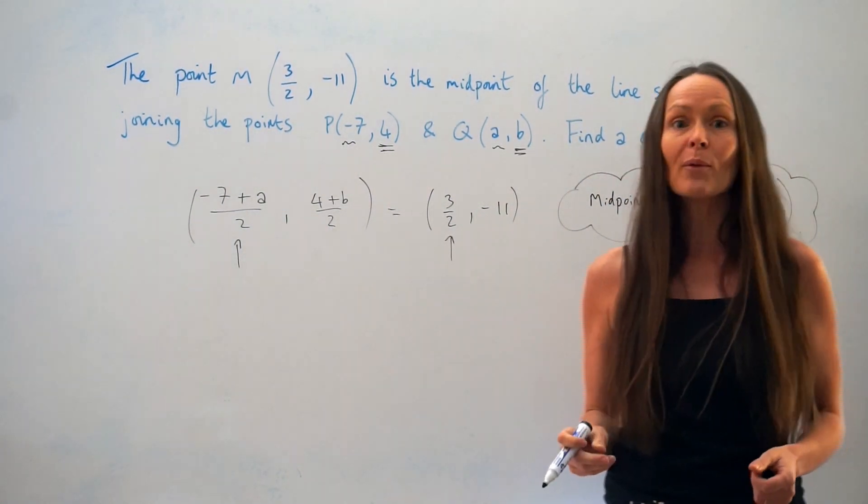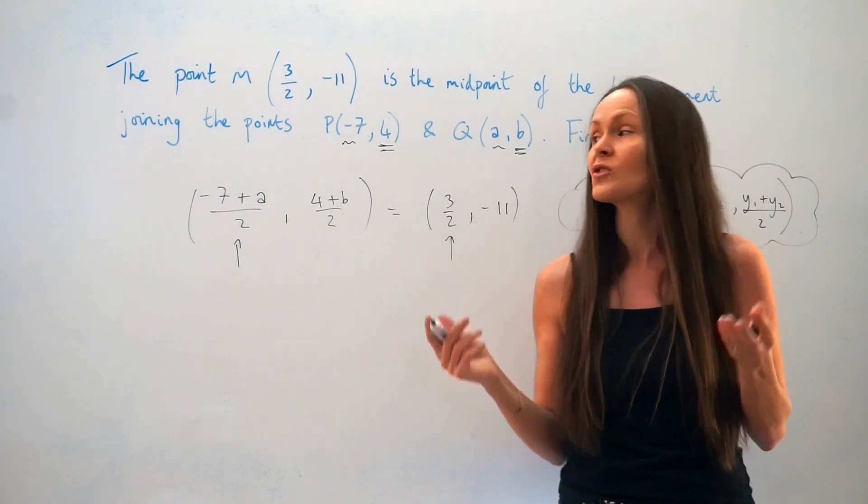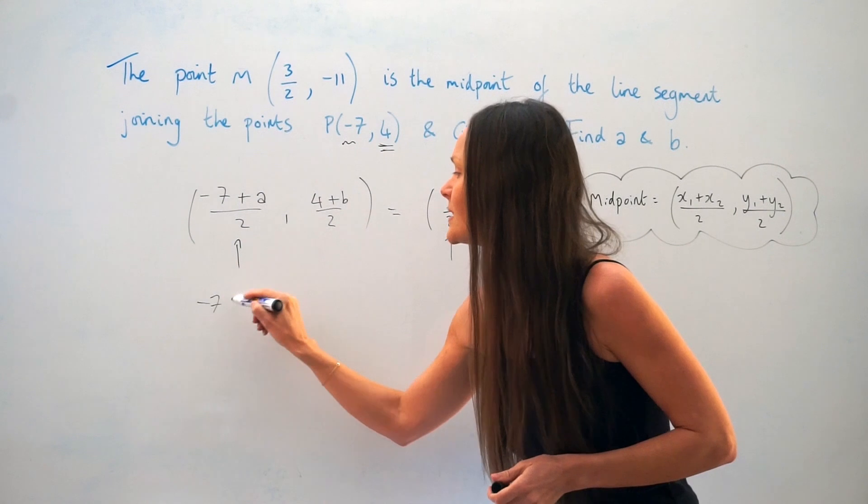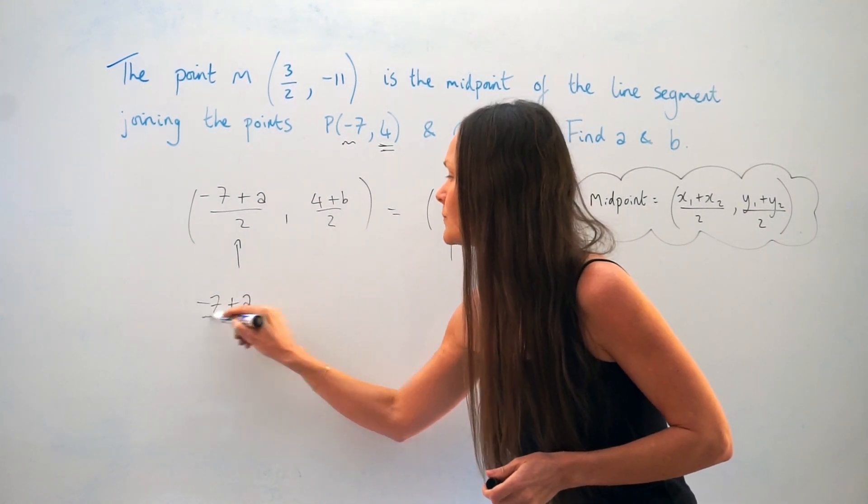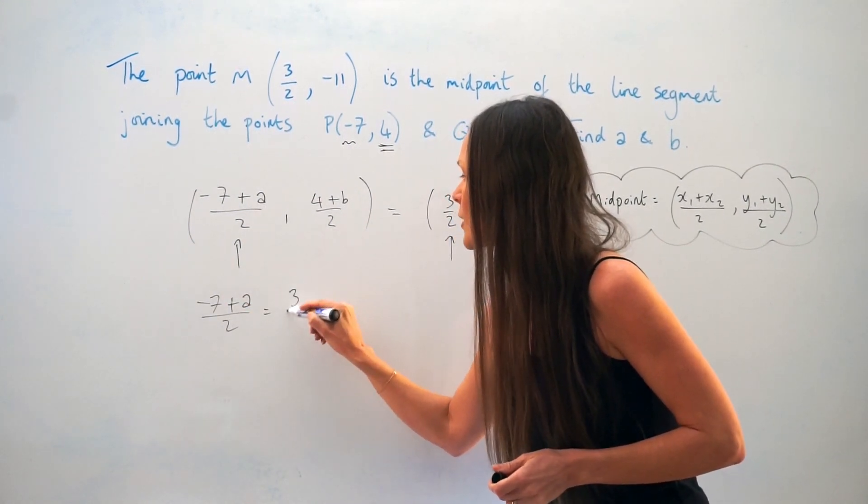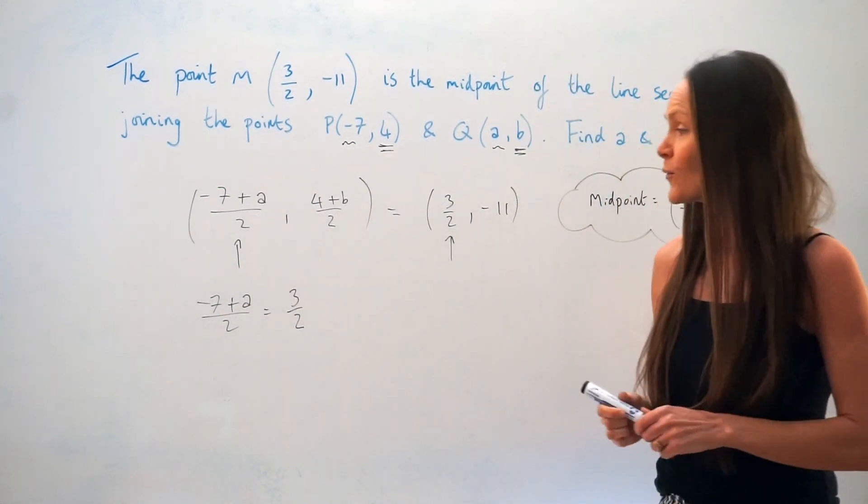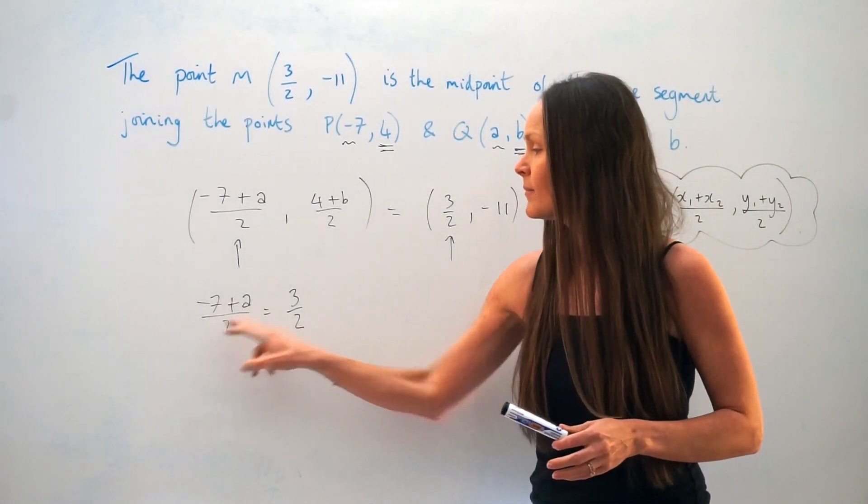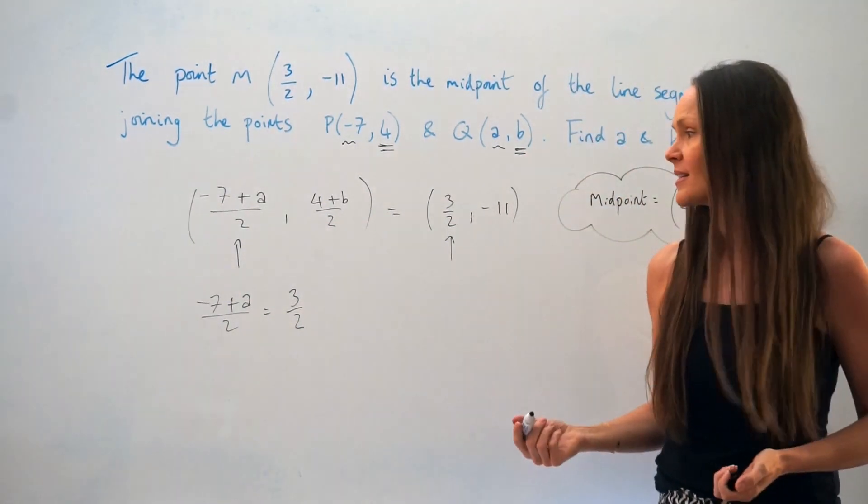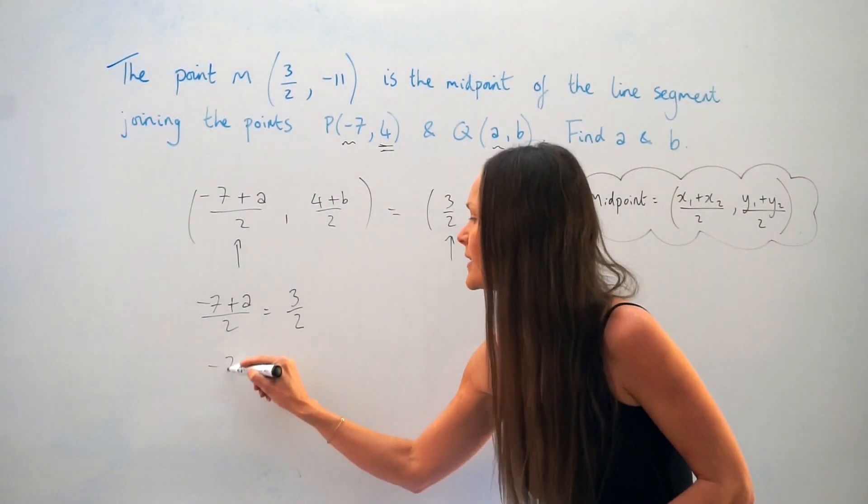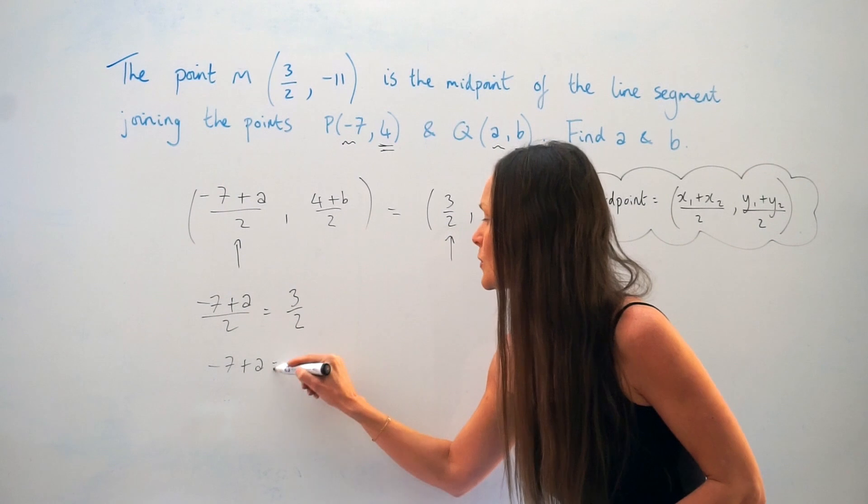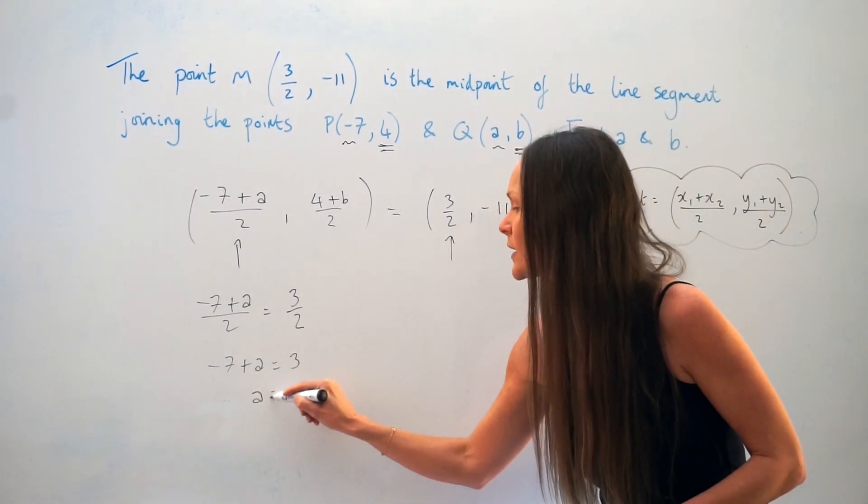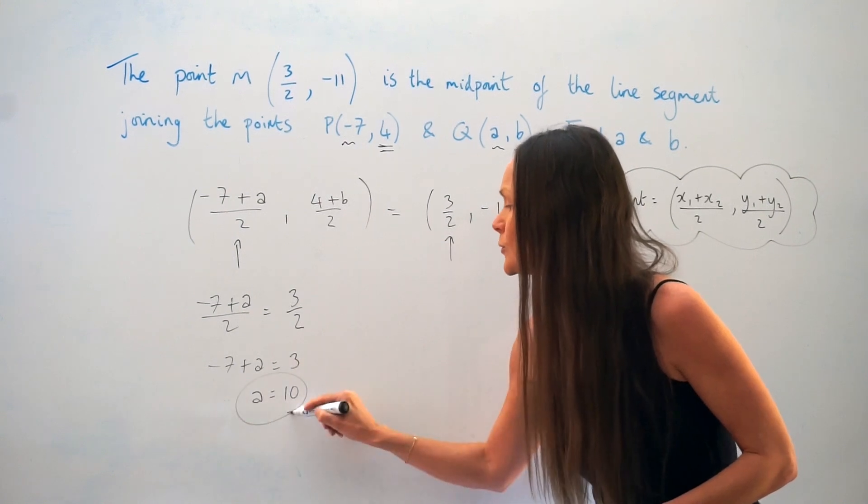And that will give us a little equation where we can solve to find the value of A. So I'm going to put that calculation, negative 7 plus A over 2, equal to 3 over 2. So if I'm solving this equation, it's a nice one because the denominators are the same, which means the numerators are the same. So I can just write negative 7 plus A is equal to 3. And then if I add 7 to both sides, I can find out that A is equal to 10.